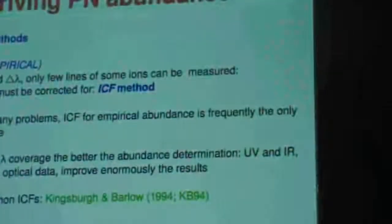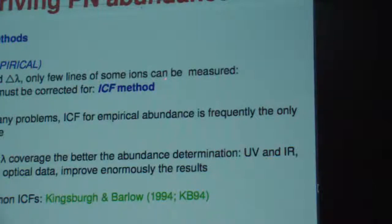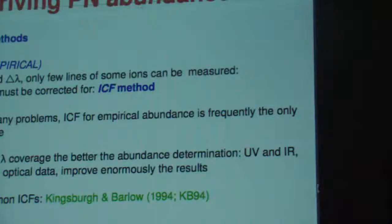So there are two ways to derive the abundance. The first one involves the right parameters — we only see some of the ions, so we need to correct for the others we cannot see. This is what you do with the ICF method. And in spite of a number of problems we will discuss, in general this is the only tool we have to obtain abundances.